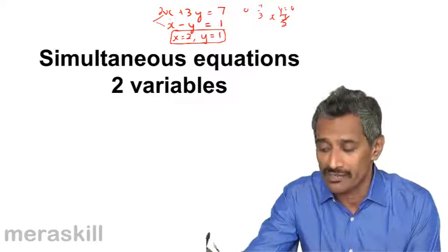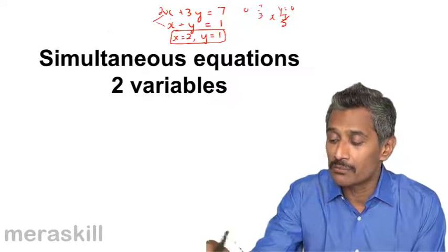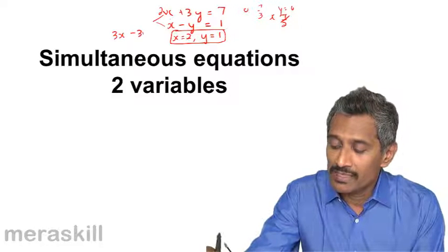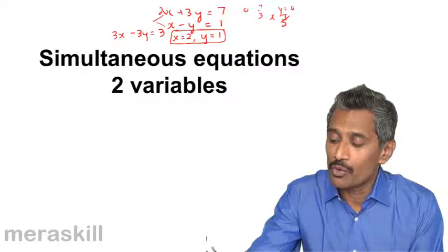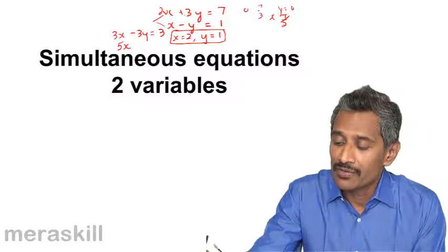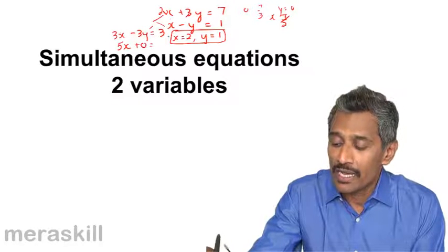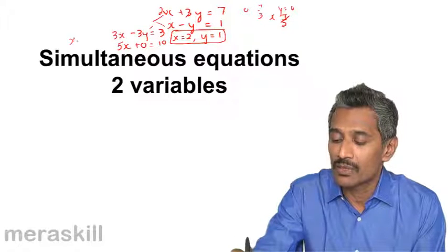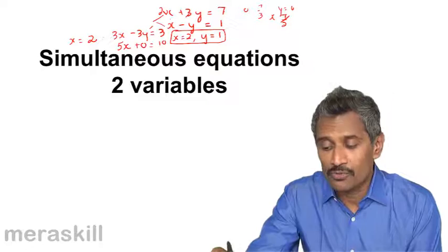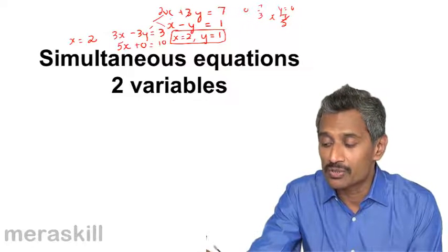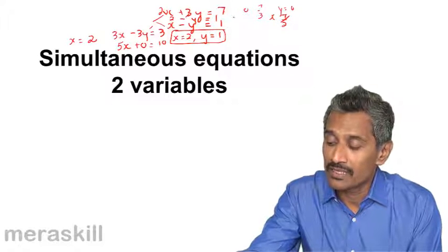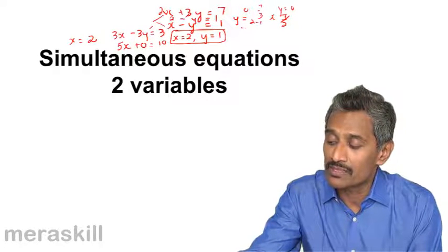Now how we get the solution? We have umpteen number of ways. For example you multiply this particular equation, if you multiply this by 3 you get 3x minus 3y is equal to 3, and then if you add this equation and this equation you get 2x plus 3x which is 5x, 3y minus 3y is 0 and 7 plus 3 is 10. So x will turn out to be 10 by 5 that is 2. So one pair, and then to find the value of y you substitute this in this particular equation. So you get 2 minus y is equal to 1 which means that y is equal to 2 minus 1 which is 1.